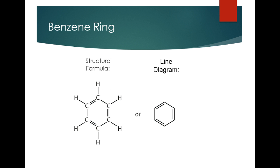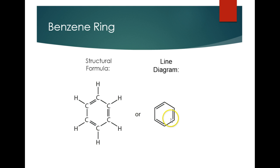There are a couple different ways that we could draw benzene rings. The first way is the structural formula. This will take a lot of time, so we usually make line diagrams. You'll see that it's a six-carbon ring that has alternating double bonds throughout that ring. This is called a benzene ring, and we'll be working with these a lot today.